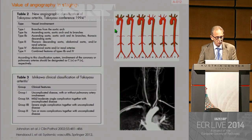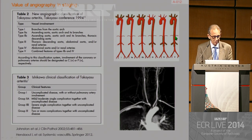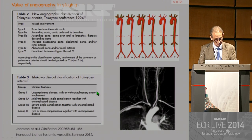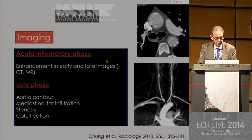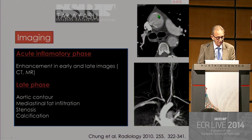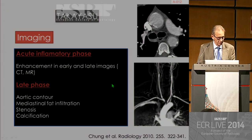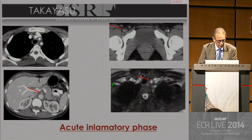We may use angiography to stage or classify Takayasu's arteritis, and there are different classifications. In imaging, Takayasu will appear in the acute inflammatory phase — if we suspect it, we have to look at the walls of the vessels. We will see enhancement in the early and late images in CT and MR. In the late phase, we will look for occlusions, stenosis, and alterations of the contour.